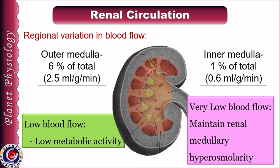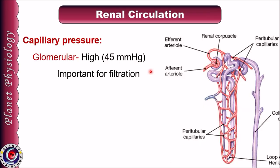Glomerular capillary hydrostatic pressure is 45 mmHg, which is much higher than systemic capillaries where it is 17 mmHg. This high pressure is necessary for the process of filtration. One reason for this higher pressure is that the efferent arteriolar diameter is less than the afferent arteriolar diameter, so there is more resistance to outflow of blood from the glomerular capillaries. This value of 45 mmHg is as per Ganong; Guyton mentions it as 60 mmHg, so it is better to stick to one value.